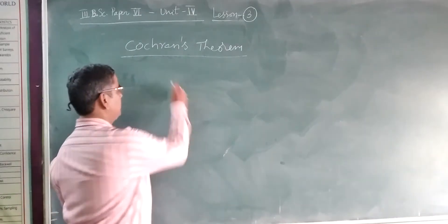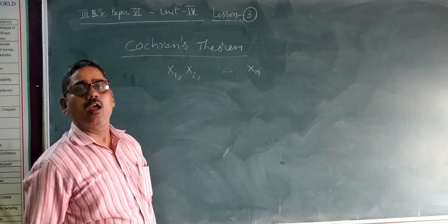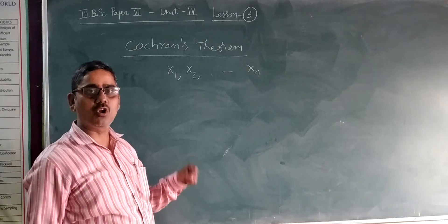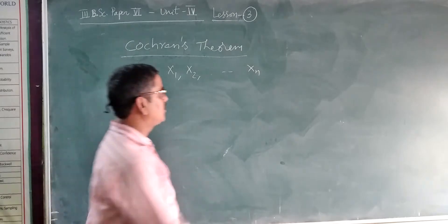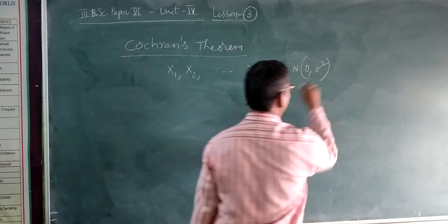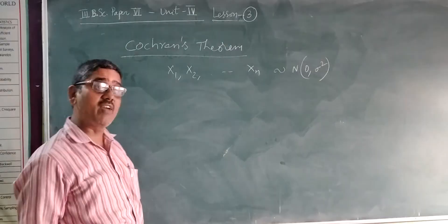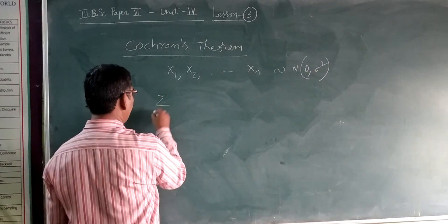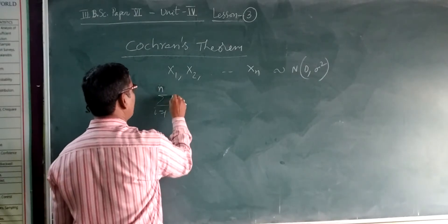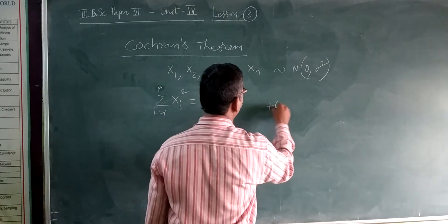If we consider X1, X2, and so on, Xn are independently drawn from the normal distribution with mean 0 and variance sigma squared. Then if we consider the sum of squares of these observations, summation i equals 1 to N of Xi squared equals Q1 plus Q2 plus and so on plus QK.